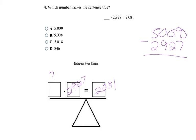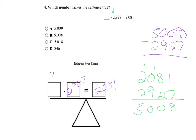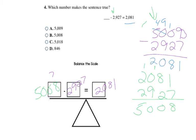I can also use opposite operations. Since subtraction is being used, if I add the two numbers on the right side together, that will give me my answer. So: 1 plus 7 is 8; 8 plus 2 is 10, carry 1; 1 plus 0 is 1, plus 9 is 10, carry 1; 1 plus 2 is 3, plus 2 is 5. So 5008 looks like my answer. Checking: 5008 minus 2927 — 8 minus 7 is 1; borrowing, 10 minus 2 is 8; 9 minus 9 is 0; 4 minus 2 is 2. That equals 2081, so B is my answer.